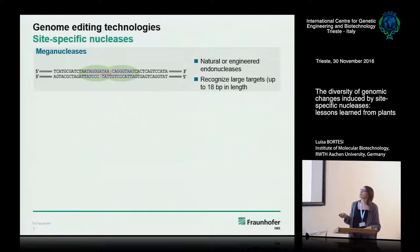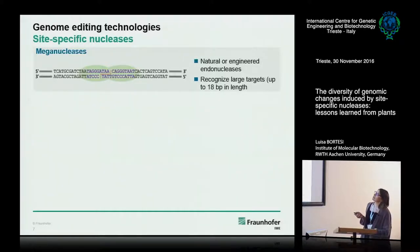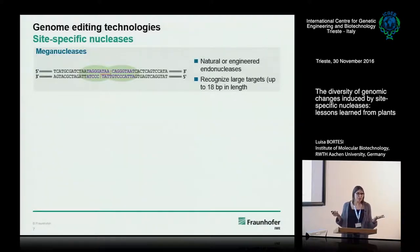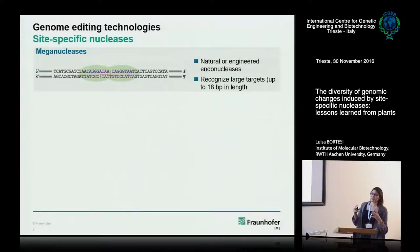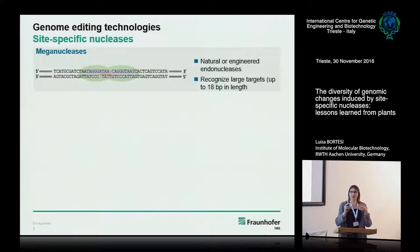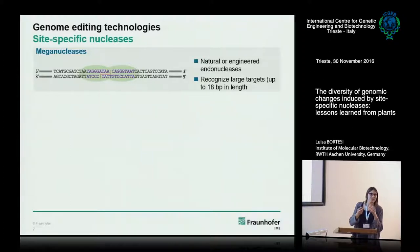Coming to these site-specific nucleases: the very first ones discovered are meganucleases, which are natural enzymes found in bacteria. They recognize a rather long sequence, around 18 base pairs in length, and were very useful initially as the first tools to cut a defined piece of DNA. However, from their structure they are very difficult to engineer — the way they bind DNA and the way they cleave it are so interconnected that it's difficult to change the specificity. So basically they have very limited usability and have not been used extensively.